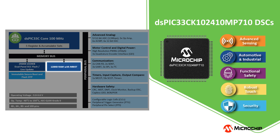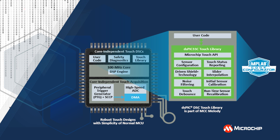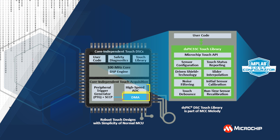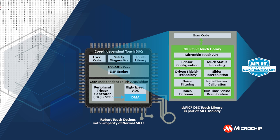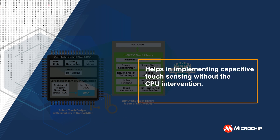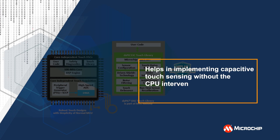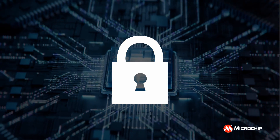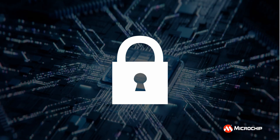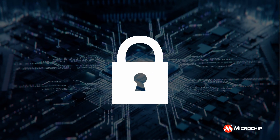The on-chip core independent peripherals, such as Peripheral Trigger Generator or PTG, together with DMA and high-speed ADCs, help in implementing capacitive touch sensing without CPU intervention. The device features a range of hardware safety and security features for developing safety critical applications with embedded security.